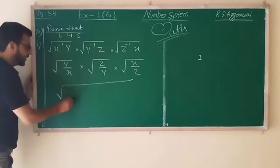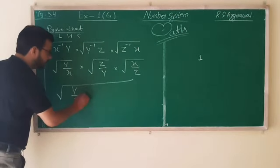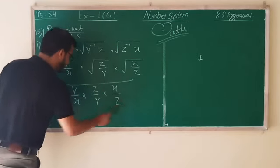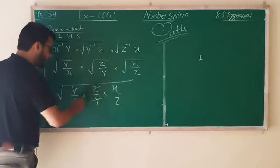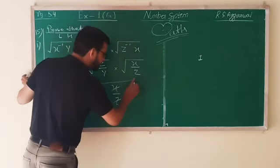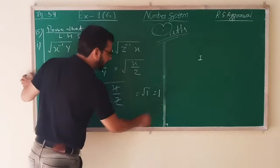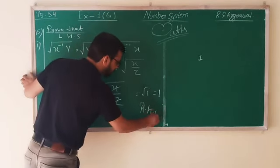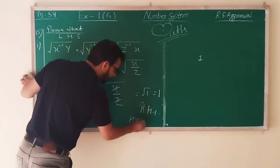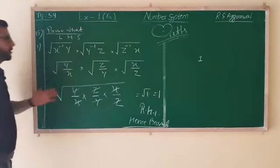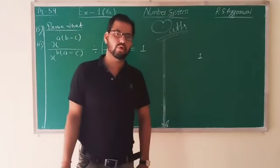That's why 1 to the third is y upon x into z upon y into x upon z. Y cancels, z cancels, x cancels. That's why value is square root of 1 equal to 1 and this is RHS and hence proved. Write it down. Okay class, let's solve one more question.